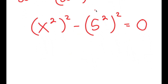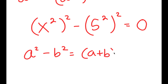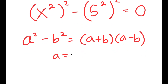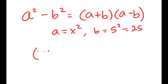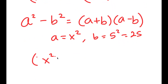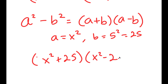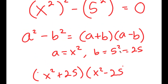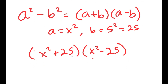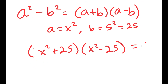The reason I did this is because now I can use the property a squared minus b squared is equal to a plus b times a minus b. So in this case, a is x squared and b is 5 squared, which is equal to 25. So I get x squared plus 25 times x squared minus 25 is equal to 0.